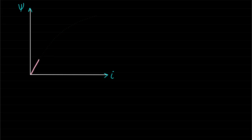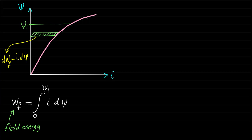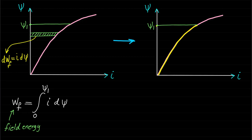As mentioned in the previous lecture, the ψ-I characteristic of any magnetic circuit such as the relay electromechanical system depends on the air gap length and the magnetic material. The change in field energy DWF can be represented graphically as a small element in the ψ-I curve. The element DWF represents a small change in field energy for a given current I. The total field energy WF for a certain value of magnetic field linkage ψ₁ can be identified by integrating I·dψ from 0 to ψ₁. The shaded area between the curve and the ψ axis represents the total field energy.